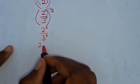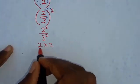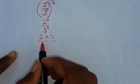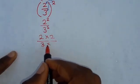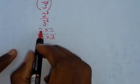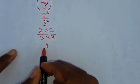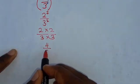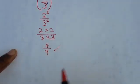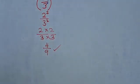This means 2 to the power 2 is the same as 2 times 2, then over 3 squared is the same as 3 times 3. So 2 times 2 is 4, 3 times 3 is 9. So this is the answer: 4/9.